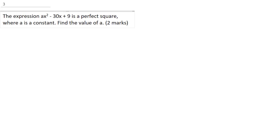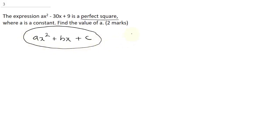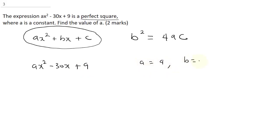Question 3 says: the expression AX squared minus 30X plus 9 is a perfect square, where A is a constant. Find the value of A. Now understand that they said it is a perfect square. Whenever you have an expression AX squared plus BX plus C, for this to be a perfect square, it must meet the condition B squared equals 4AC.